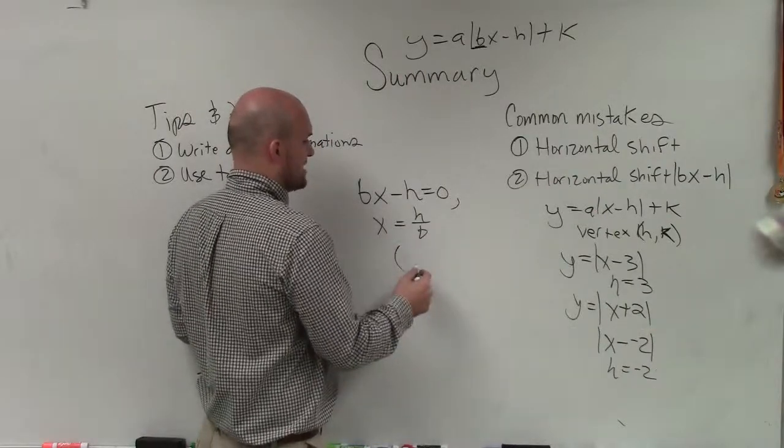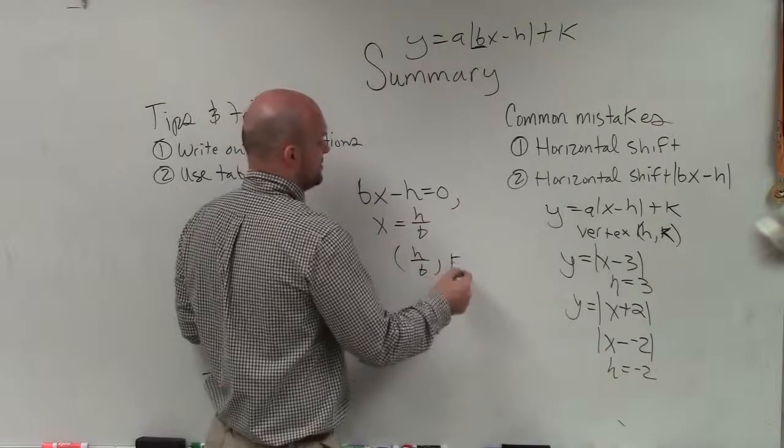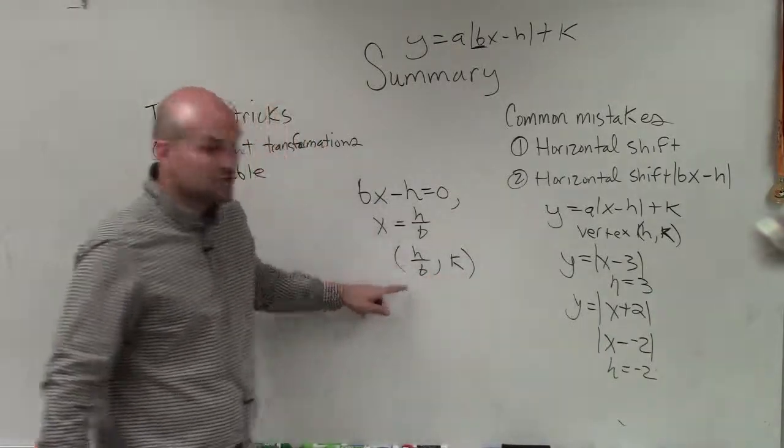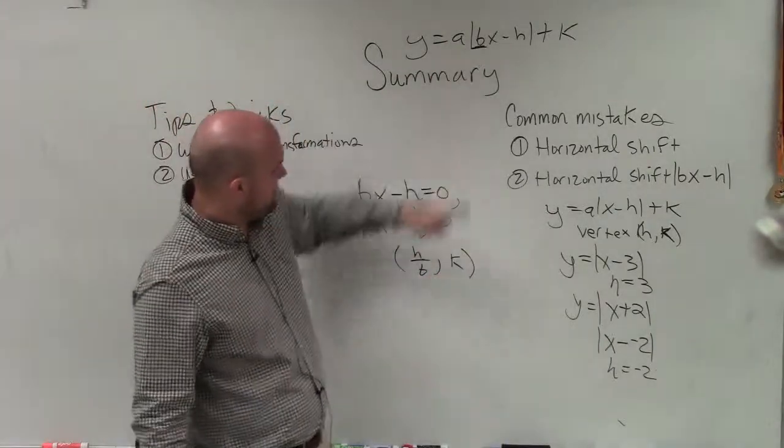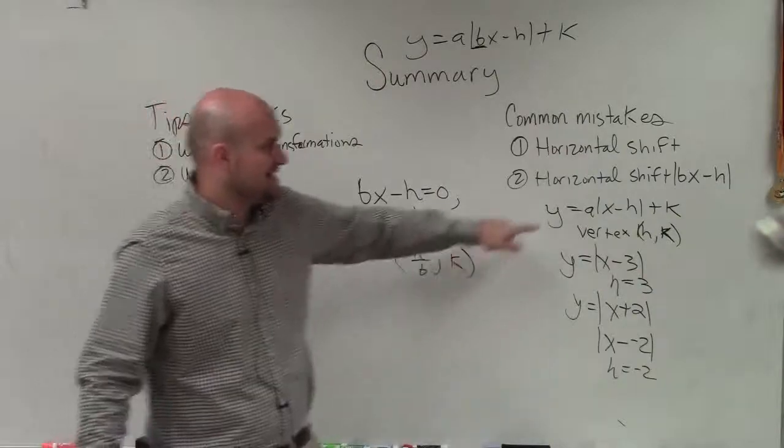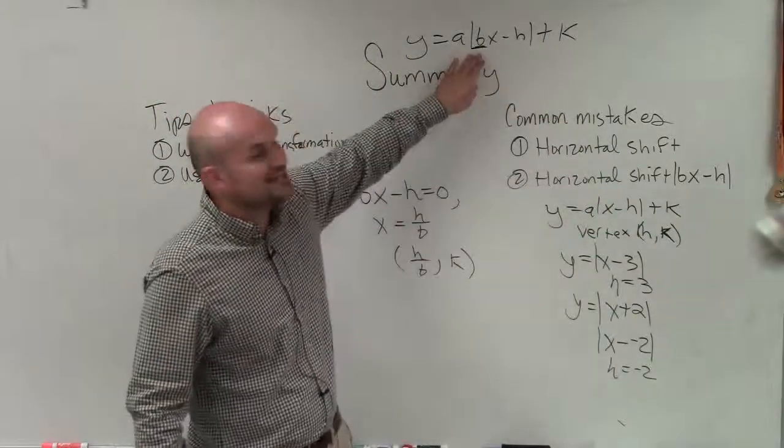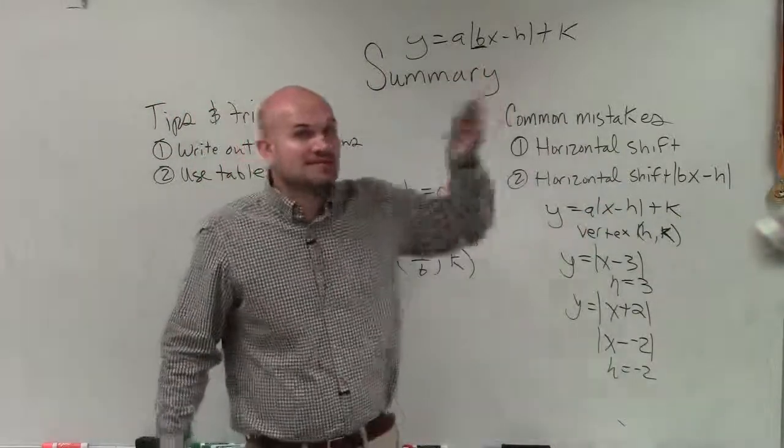So therefore, your vertex is really h divided by b comma k. So your new vertex, when you have it in this format, is h over b comma k, not h. So you've got to take into account that b when you're identifying the vertex.